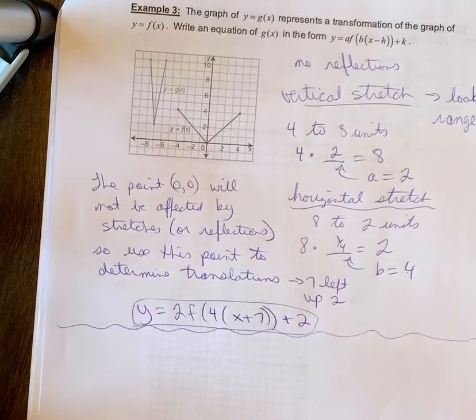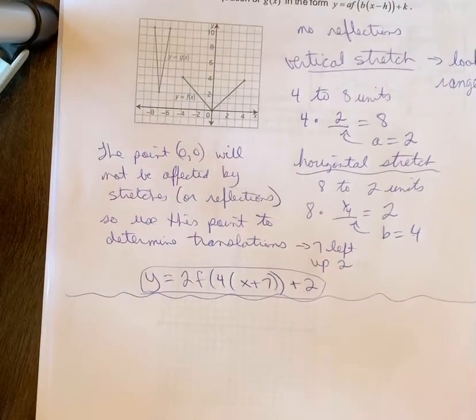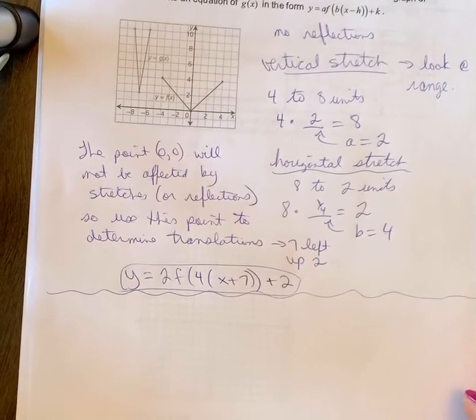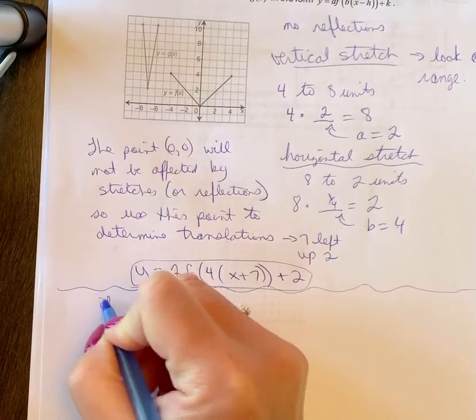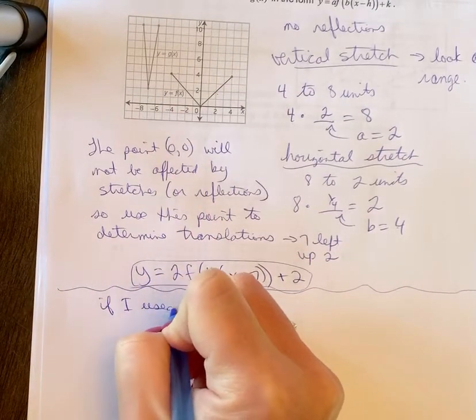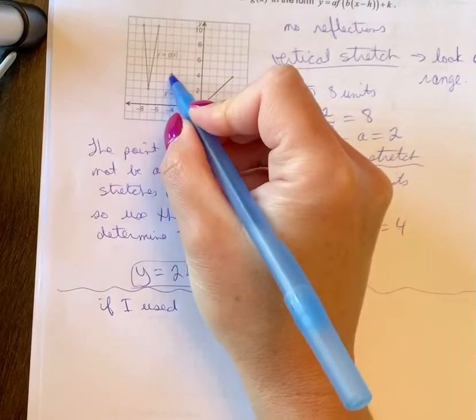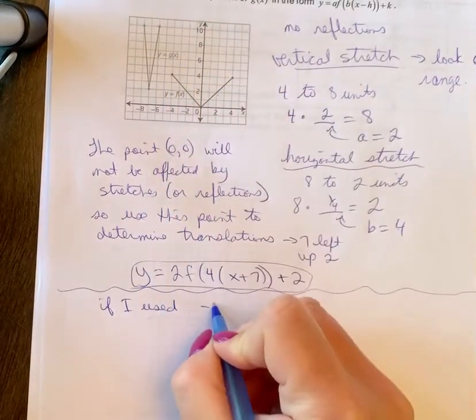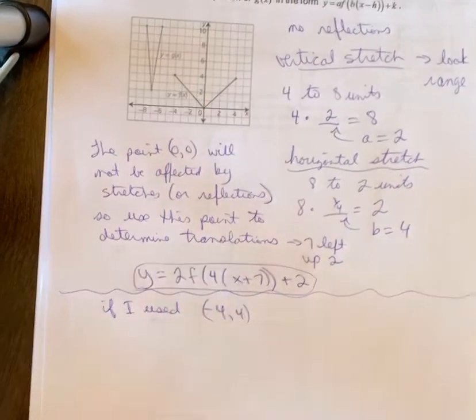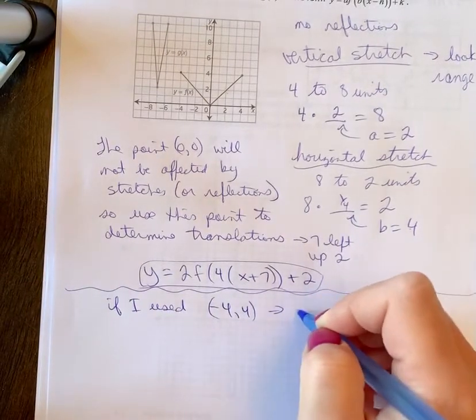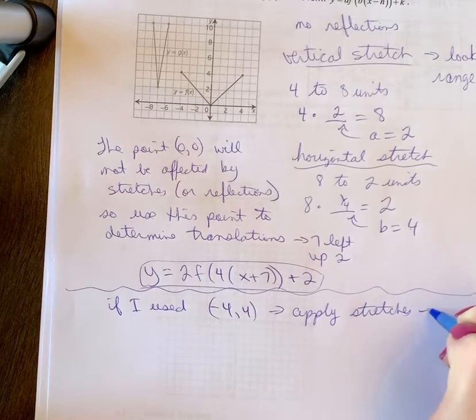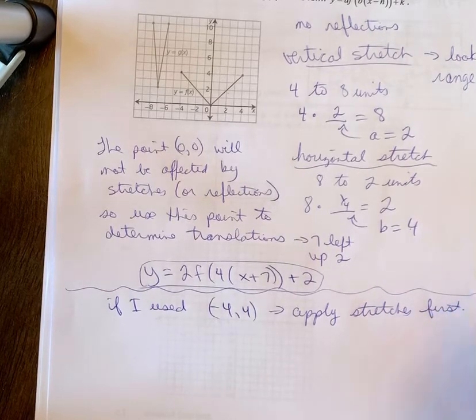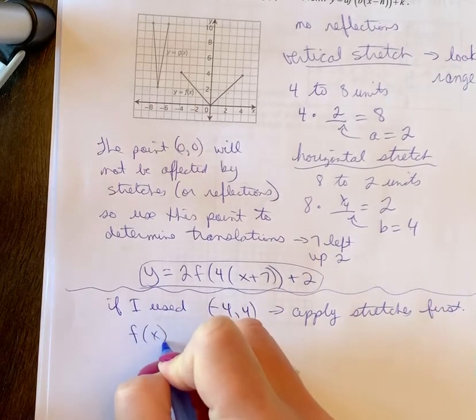But let's say, and we will do on the next example, one where you would have to use this method, but we're going to start on this one to say, well, what if I use, so if I used the point, let's pick this one, negative 4 and 4, I'd have to apply the stretches first. So you would apply stretches first.